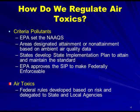So how do we regulate air toxics? We've talked about criteria pollutants in earlier modules. For criteria pollutants, EPA sets the National Ambient Air Quality Standards. Areas are designated attainment or non-attainment. States develop state implementation plans, or SIPs, to attain and maintain the standards. EPA approves the SIP to make them federally enforceable. But when it comes to air toxics, federal rules are developed based upon risk and delegated to state and local agencies.